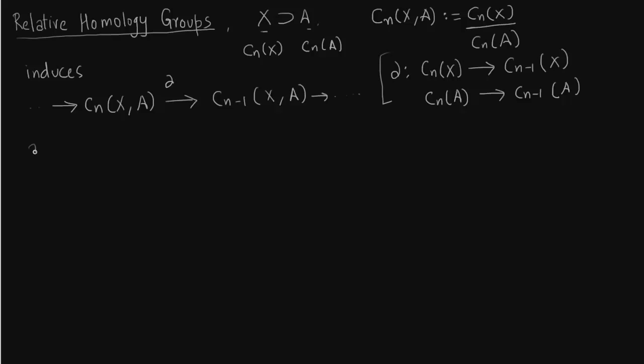So obviously now we want to talk about the homology groups of such a complex. So the homology groups of such a complex are called relative homology groups. And we write it the same way, that is kernel of delta_n over image of delta_{n+1}.